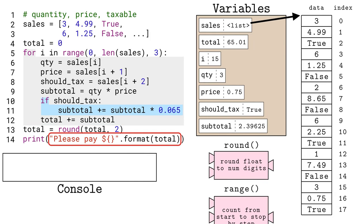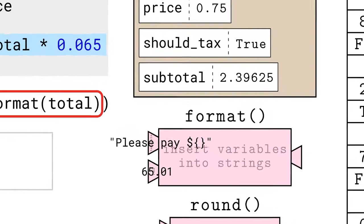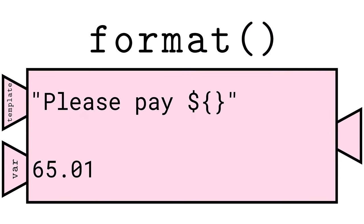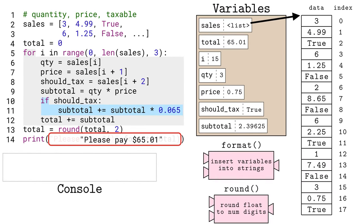Before printing, we use the format string method to insert the total variable into this string. We want the float to go immediately after the dollar sign, so we put a pair of curly braces in the template string, and this acts as a placeholder, which is then replaced with the value of total that was passed in. Finally, we use the print function to display the formatted string to the user.